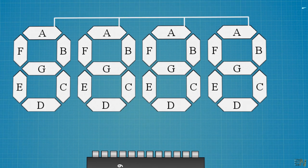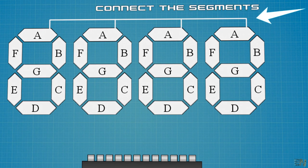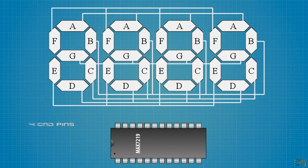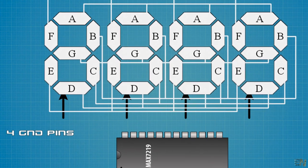We connect all the A segments together from all the 7 segment displays, all the Bs, all the Cs and so on. Then we will have 4 different ground pins for each display.